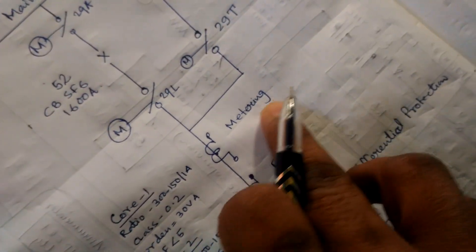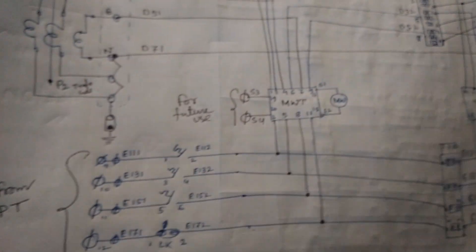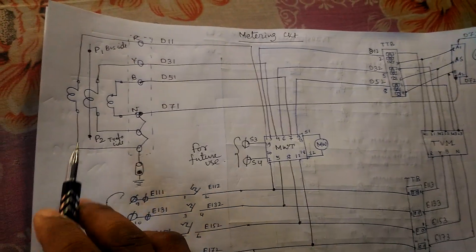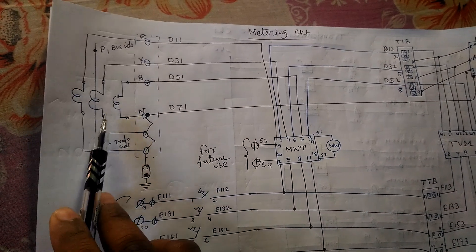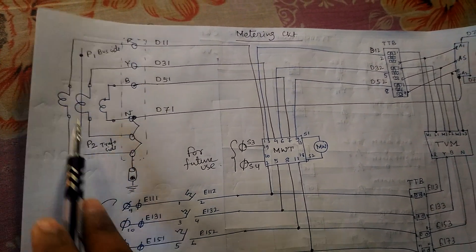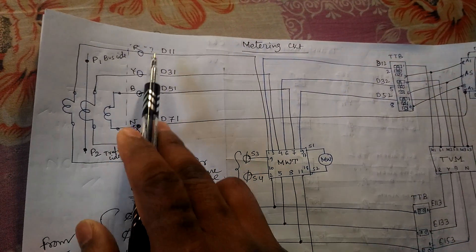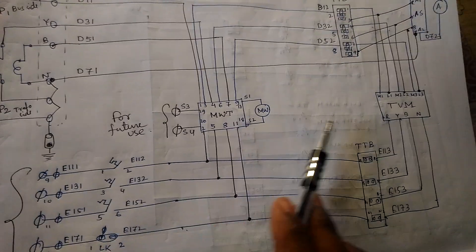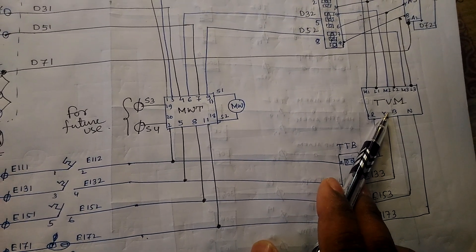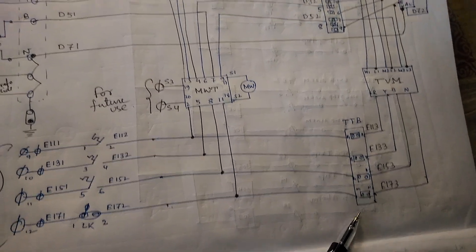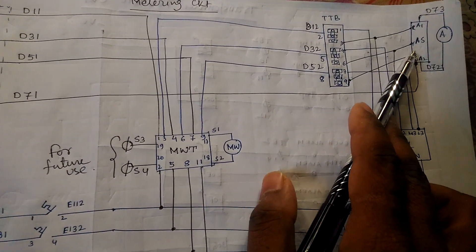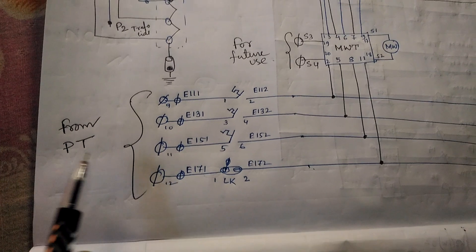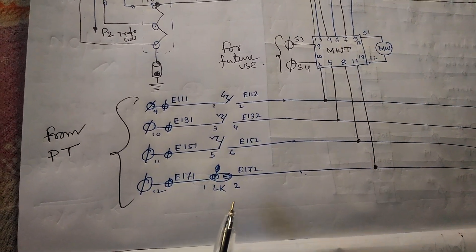Now we discuss the first topic: the metering circuit — how we connect the metering circuit in a panel. The CT has three cores: 1S1, 1S2 for each phase — R, Y, B. This is the megawatt meter, this is the TVM (trivector meter), this is the TTB (test terminal block), and this is the ammeter selector switch and ammeter.